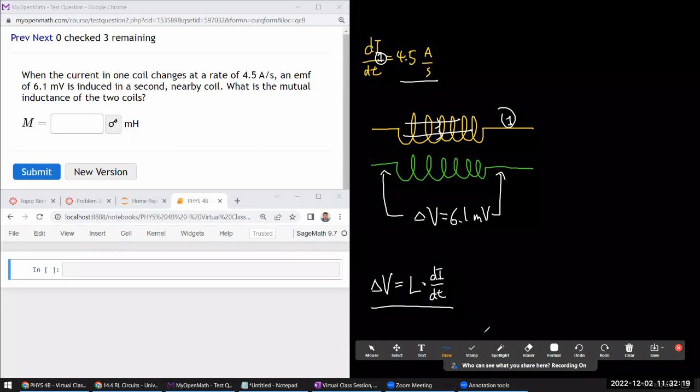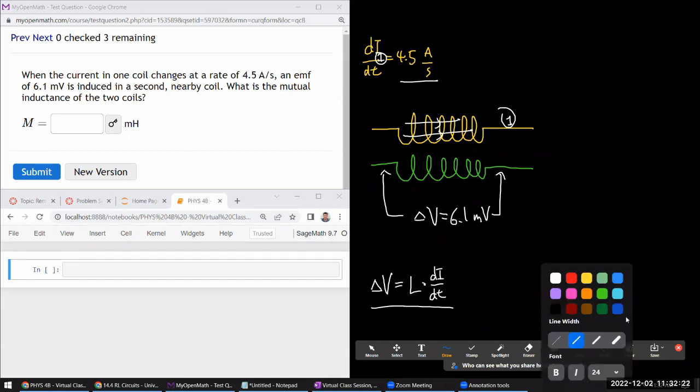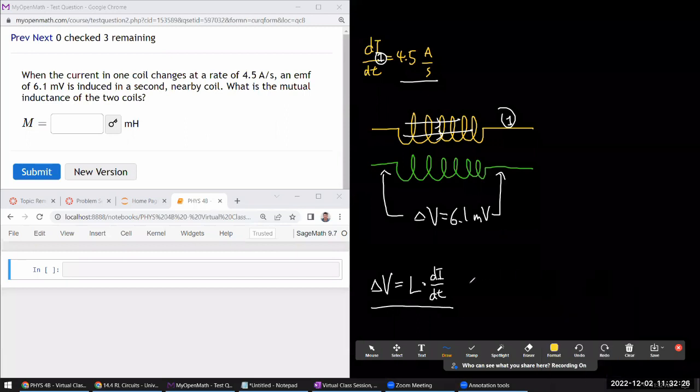So let me call this coil one, and we have the rate of current change through coil one at this rate. And it says that there's a voltage difference that's induced here that's equal to 6.1 millivolts. I don't know if I remember the formula for mutual inductance. I'm more used to using the self-inductance formula for inductors, for which we say change of voltage across an inductor is its self-inductance times the rate of change of current.